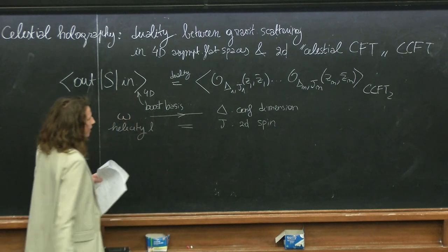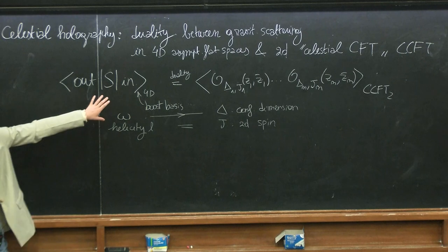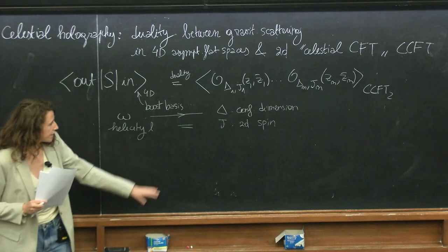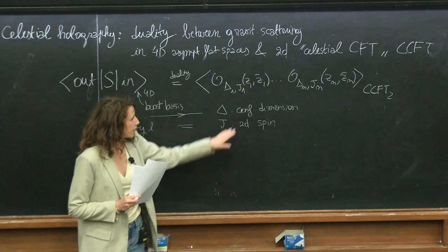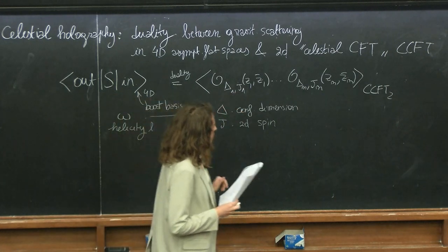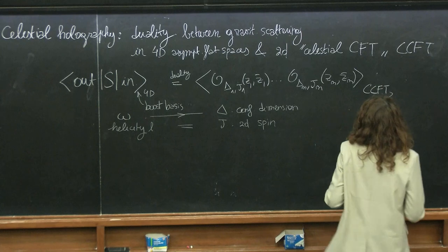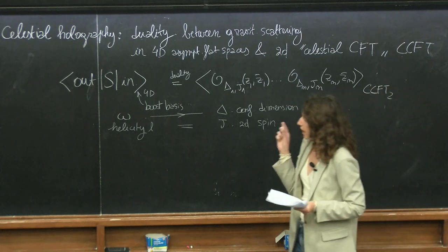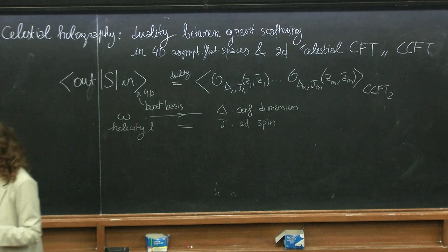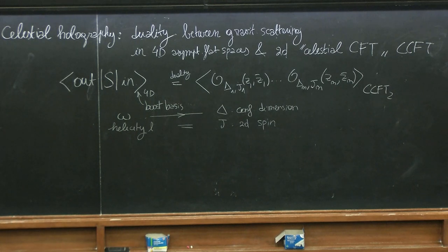The spin of the operators in the correlator will be the helicity of the particle. The Z and Z-bar coordinates will label how the particle enters and exits the celestial sphere. I will explain this in much more detail — it's just to give you a broad outlook of what we are going to deal with.